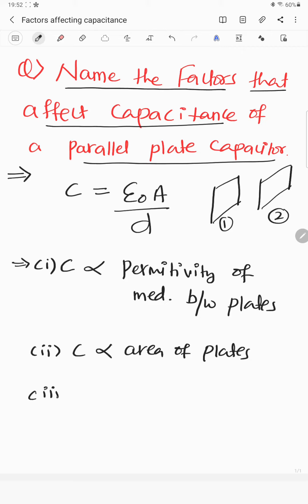And how about the third one? So this one is inversely proportional to distance between plates. So whatever distance between plates is there, it is inversely proportional. That is, if you decrease this distance, the capacitance will increase and if you increase the distance, then capacitance will decrease.